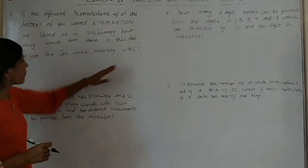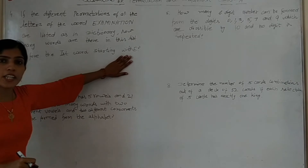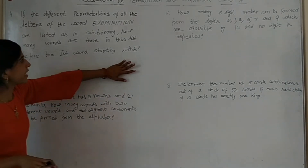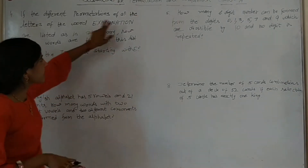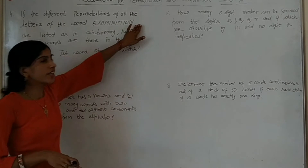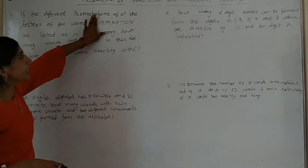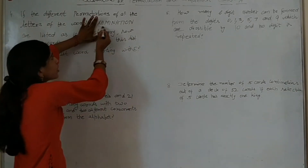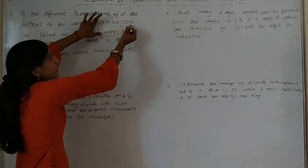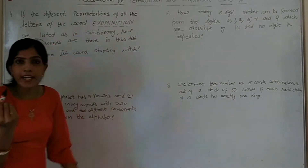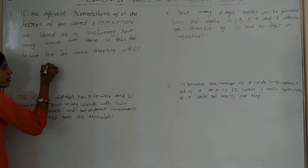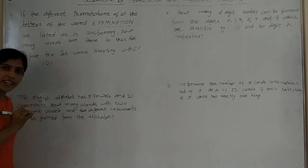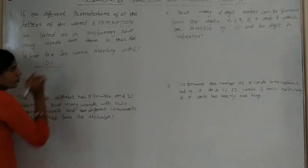The first word starting with E — E is fixed, so we will not count E. Our first letters are 11 in total. E ko hum count nahi karenge, toh kitne rahenge? 10 remaining letters. So the first letter fixed hoga, and humare paas 10 letters rahenge. 10 factorial.